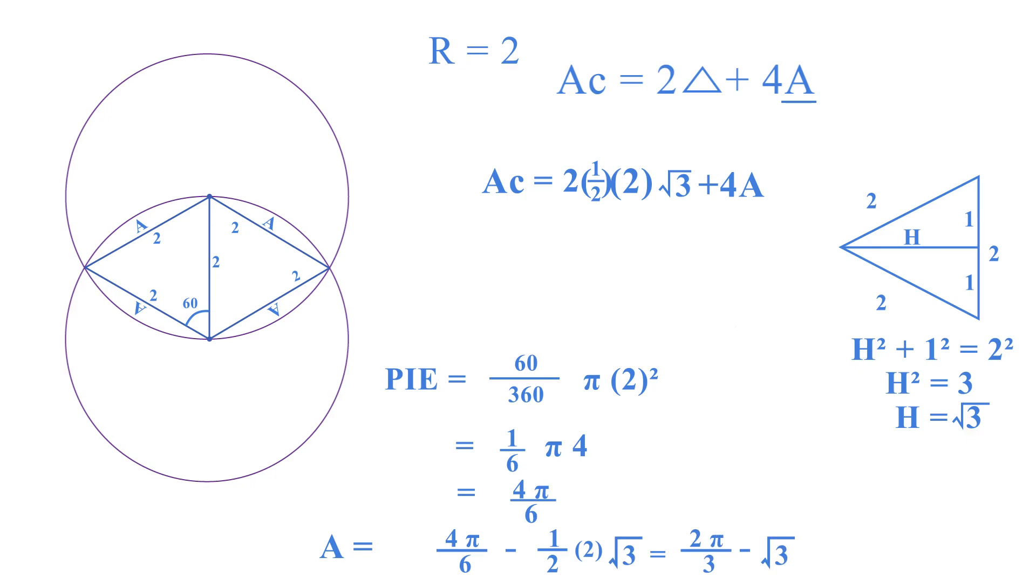And now we can substitute that into here. So AC will then become 2√3 plus 4 times (2π/3 - √3) like this. And this becomes 2√3 + 8π/3 - 4√3.